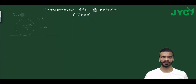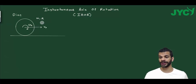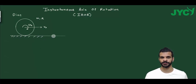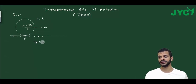Here is a disk, and this disk is rolling on the ground with no slipping — no skidding. What is this contact point? The velocity at the contact point is zero. So the point here has velocity equal to zero.